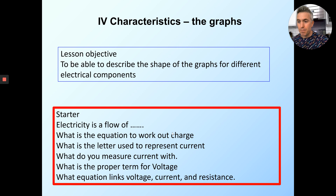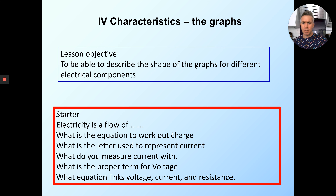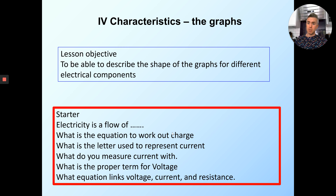Hi! New lesson. We are looking at something called IV characteristics, and we're looking at the IV characteristics of particular electrical components. So what we have to do is I'm going to introduce you to those electrical components and then I'm going to show you what happens when you change the I and the V — the current and the potential difference.